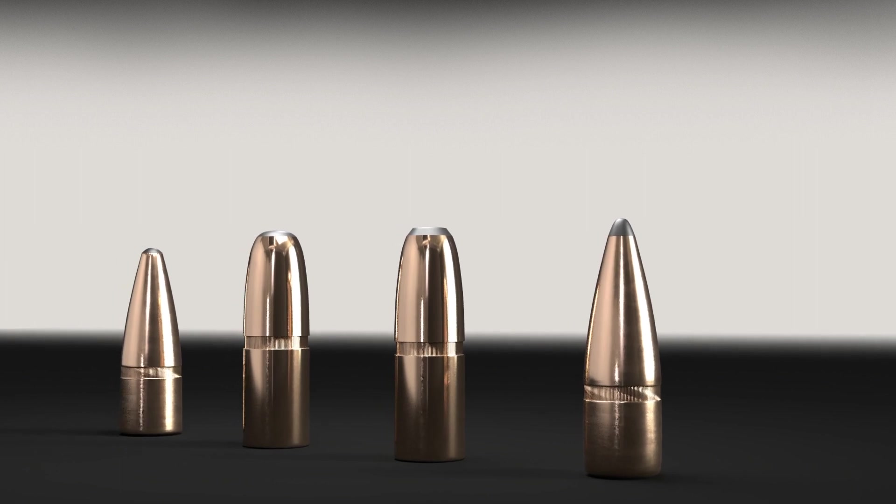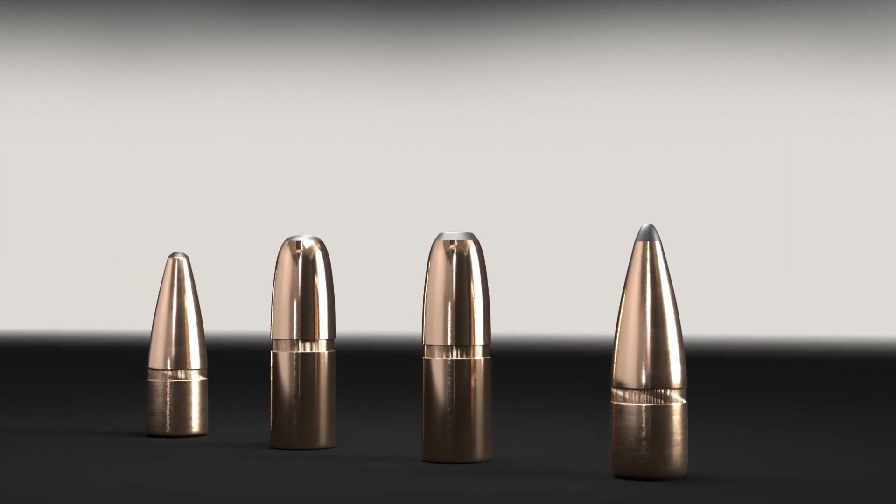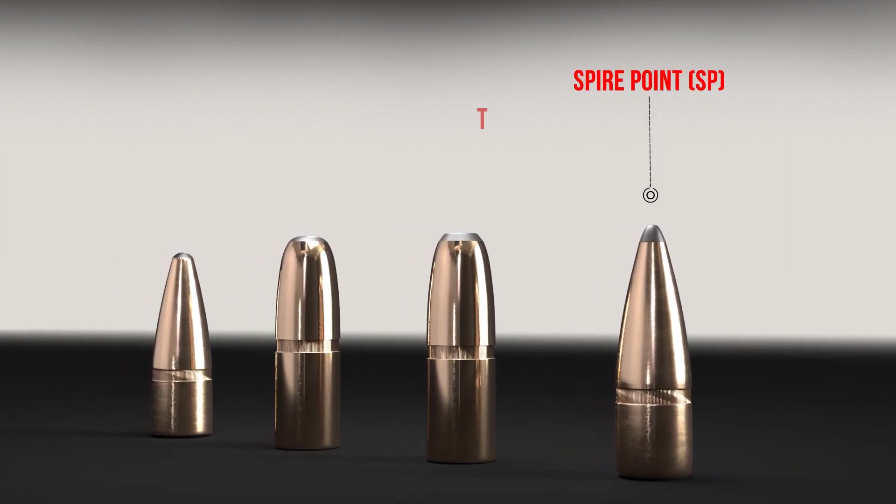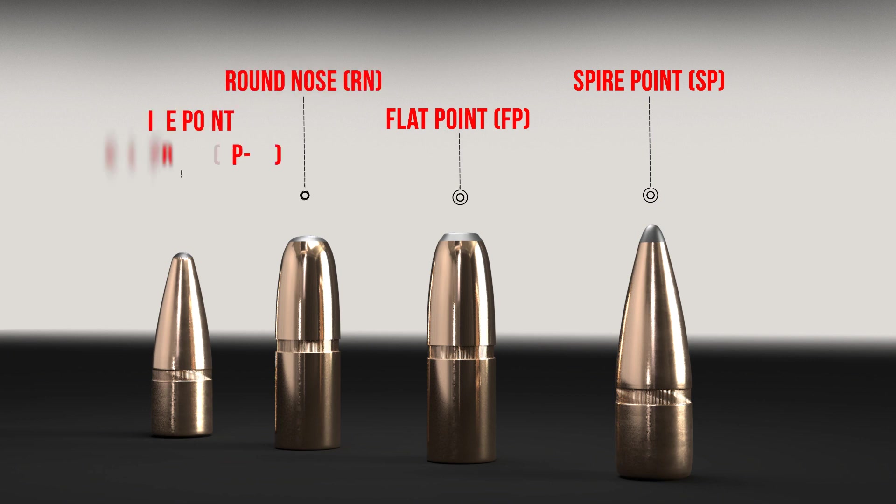The Interlock is also manufactured in a variety of bullet profiles: Spire Point, Flat Point, Round Nose, and the Spire Point Recoil Proof.